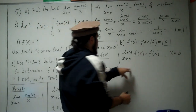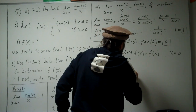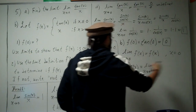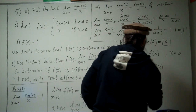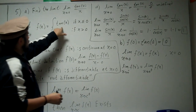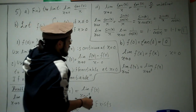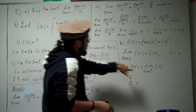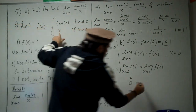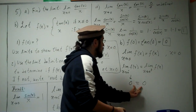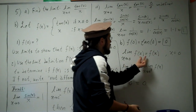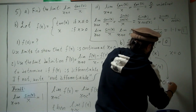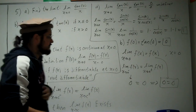We compute the left-hand limit as x approaches 0 of f(x). Since x values are less than 0, we use the tangent branch: the limit of tangent of x as x → 0⁻, which equals 0. For the right-hand limit as x approaches 0, we use the x branch, giving 0 as well. Since both one-sided limits equal 0 and f(0) = 0, the function is continuous at x = 0.